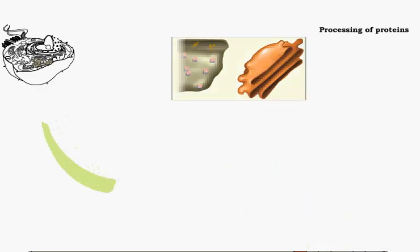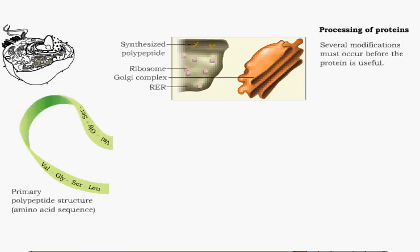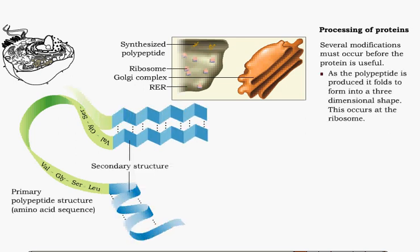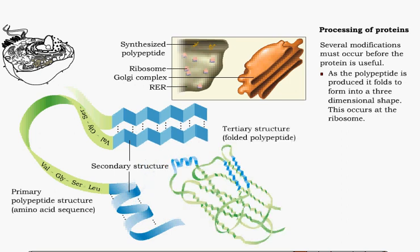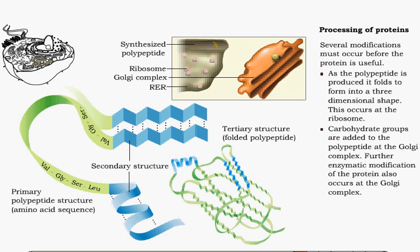A polypeptide must be modified before it can become a useful protein. As the polypeptide is translated at the ribosome, it folds into a three-dimensional form. After the polypeptide is released from the ribosome, it is moved to the Golgi complex, where carbohydrate groups are added.